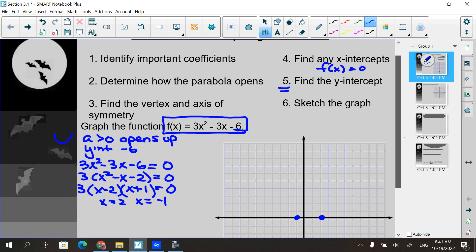Then next it says find the vertex and the axis of symmetry. Well, you might remember from yesterday, the x value of the vertex is x equals negative b over 2a.